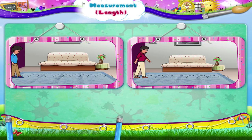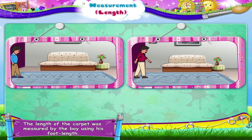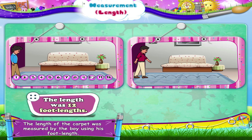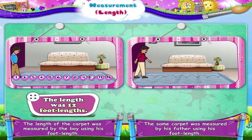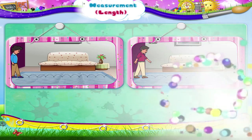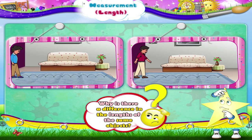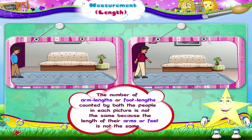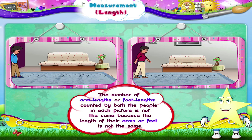In the second picture, the length of the carpet was measured by the boy using his foot length. Now the length of the carpet was nine foot lengths. The same carpet was measured by his father using the foot length. The number of arm lengths or foot lengths counted by both people in each picture is not the same because the length of their arms or feet is not the same.